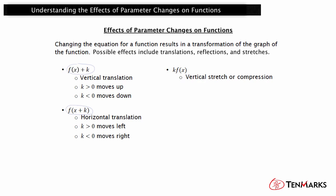k times f(x) will result in a vertical stretch or compression of f(x). When k is negative, it also results in a reflection over the x-axis. The graph is stretched so that each point is k times as far from the x-axis as its corresponding point in f(x).